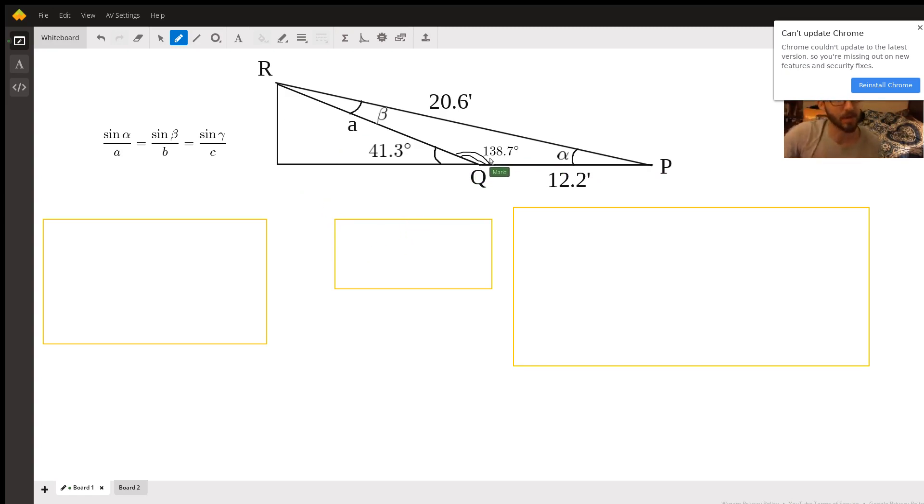Utilizing supplementary angles, I can figure out the measure of this angle here by taking 180 degrees minus 41.3 degrees to get 138.7 degrees. And then noticing that I have an angle, I know the measure of a side opposite that angle. I have another side length in this triangle that I know, the 12.2.